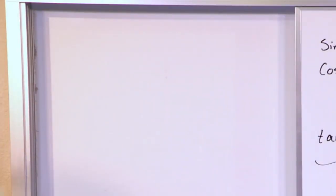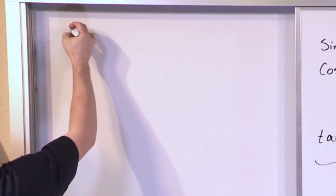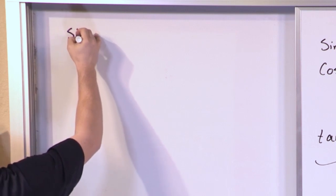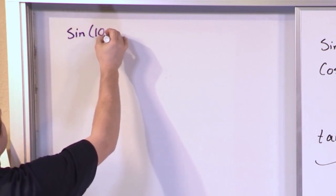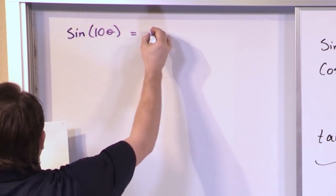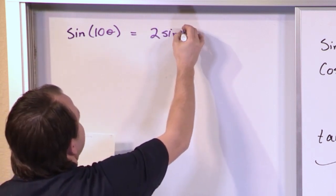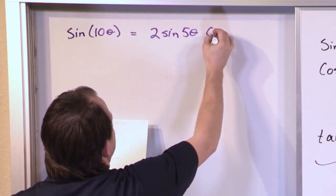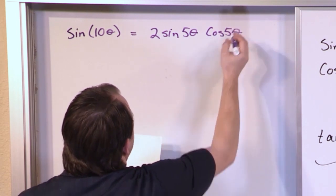What if we had something like, if we wanted to prove that sine of 10 times theta was equal to 2 times the sine of 5 theta times the cosine of 5 theta? How would we do that?